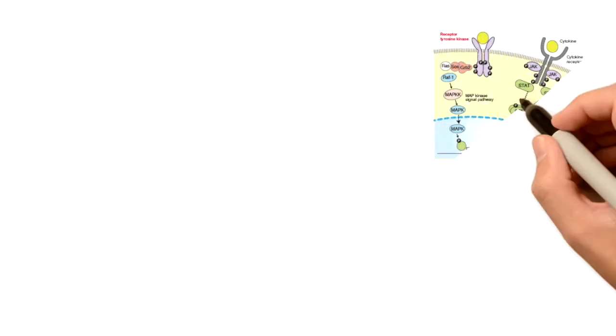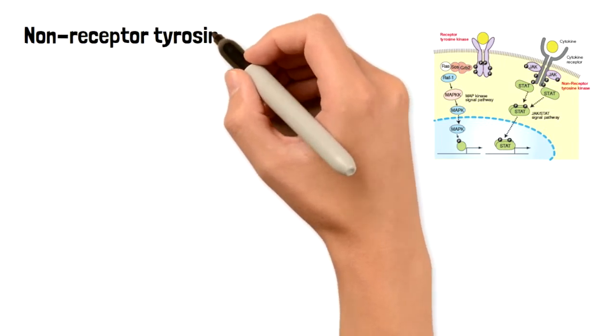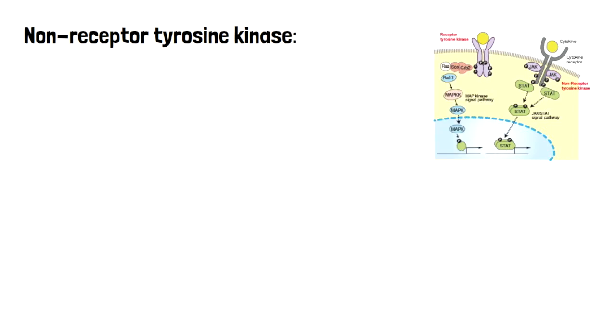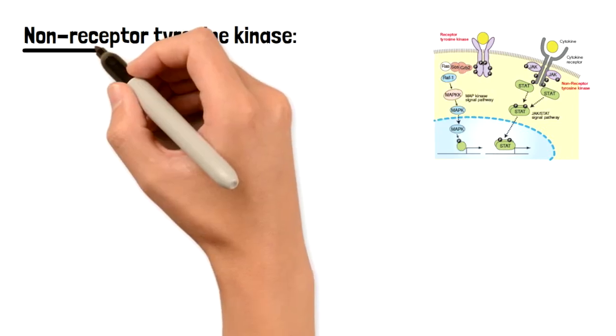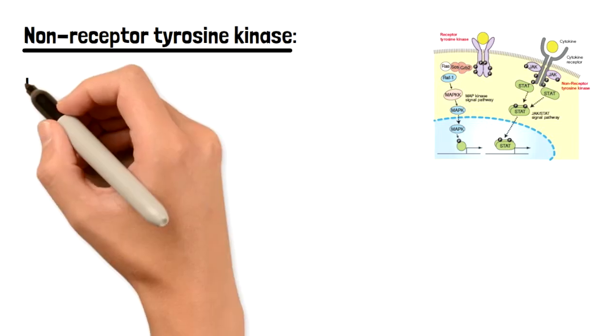Now let's talk about that in comparison to non-receptor tyrosine kinase, and that's the picture on the right. So non-receptor tyrosine kinases: the ligand is also going to bind on this receptor, which is also a transmembrane receptor. However, there's going to be a key difference here between the two.